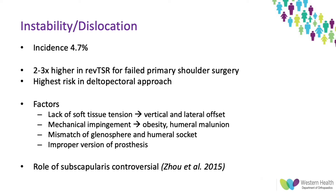The main factor contributing to instability and dislocation is thought to be lack of soft tissue tension, which can be due to shortening of the humerus from bone loss or a cut that's too distal, or medialization of the glenoid from bone loss or excessive reaming. It's really important to recreate the vertical and lateral offset with prosthesis position to allow for appropriate deltoid tensioning. Other factors include mechanical impingement in obese patients, humeral malunion, glenosphere-to-humeral socket mismatch, and improper prosthesis version.